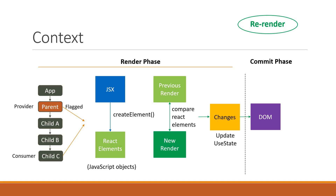So we have created this very component tree from the slide. Our aim is to get the count value from the Parent component and display it in the Child C component, and the way to do that is to use the context API. In the Parent component we create and provide the context value, and in the Child C component we consume it using useContext. Let's go back to VS Code and implement that.